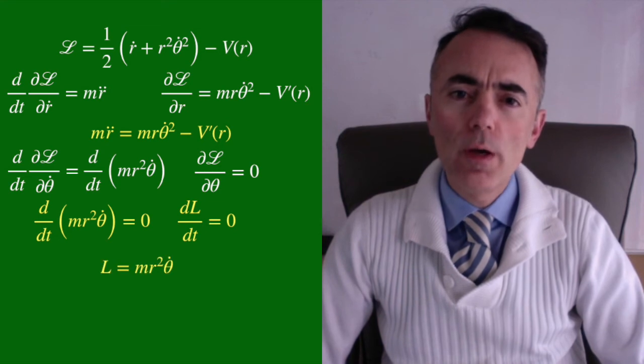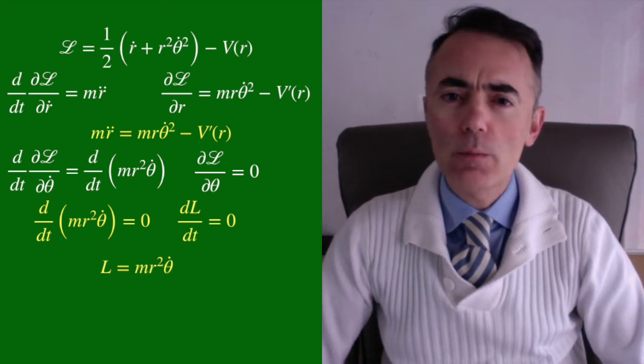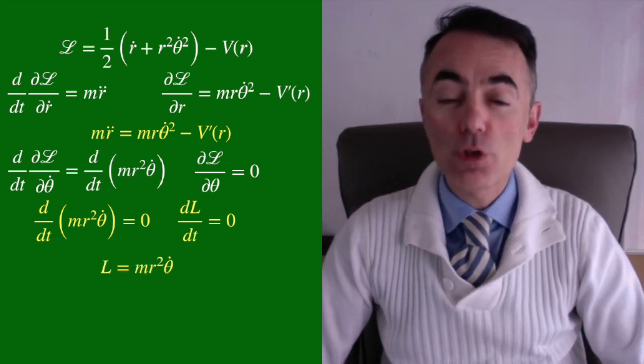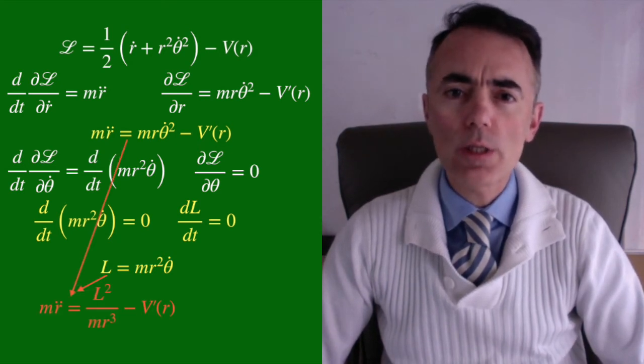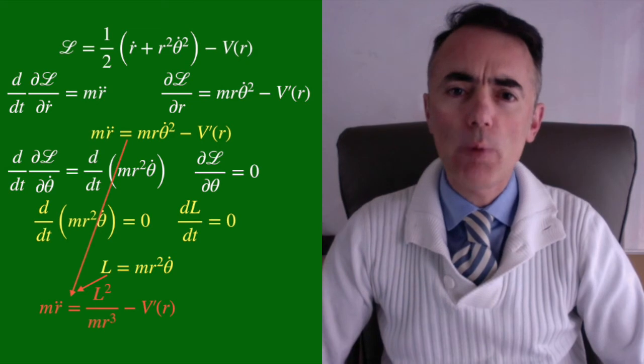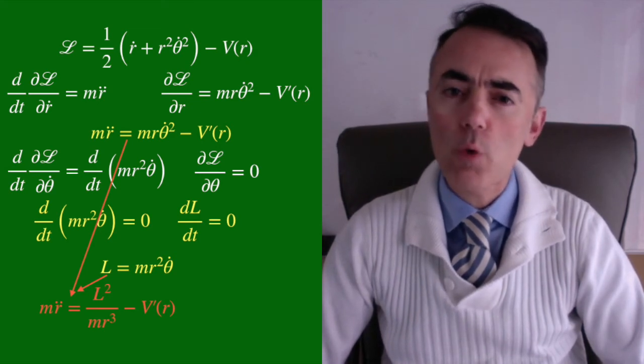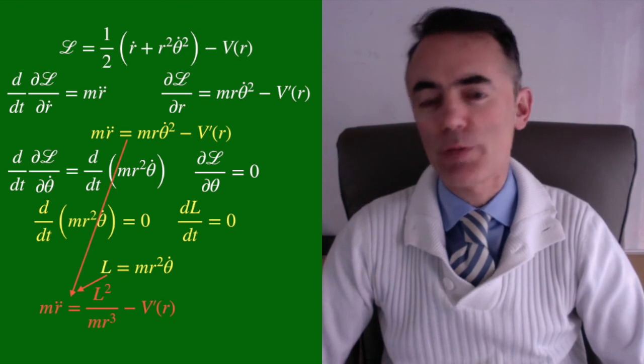Now, I'm going to use this angular momentum L, and I am going to join these two equations. So, mr double dot is equal to L squared over mr cubed minus V prime of r, where prime here means derivative respect to r.